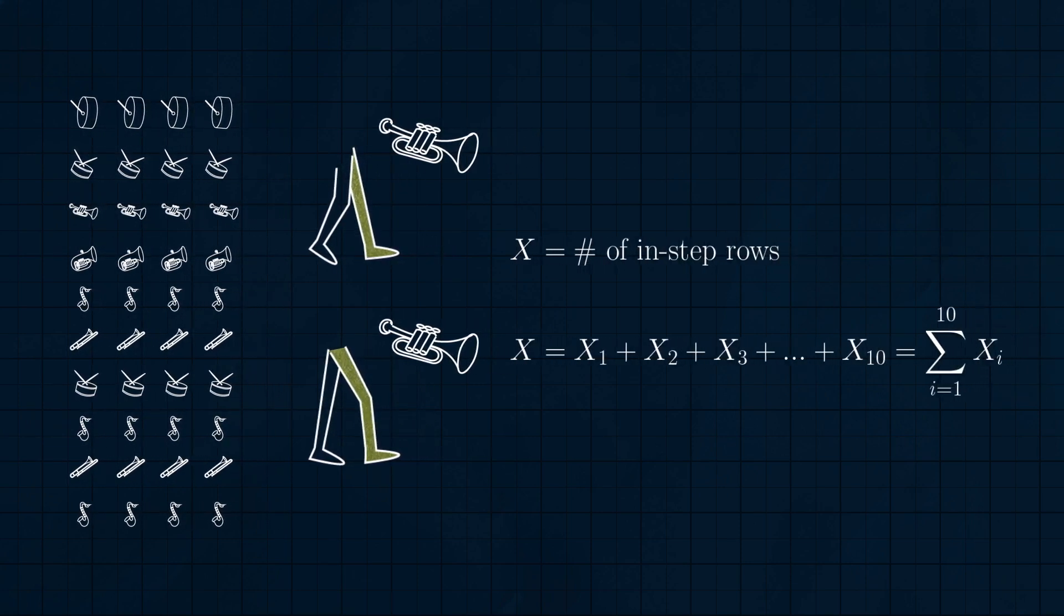Well, if x is the random variable of the number of instep rows, then we know x equals the sum of x sub i for i equals 1 to 10, where x sub i is the random variable that is equal to 1 if the ith row is instep, and 0 if the ith row is out of step.